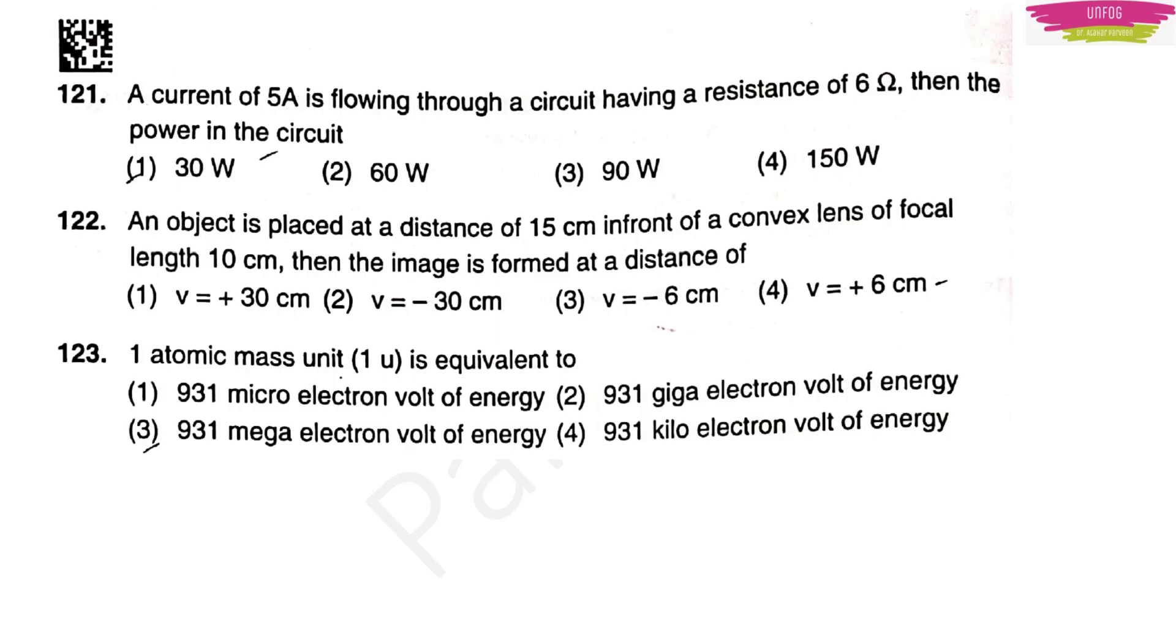First science question was question number 121. This part is from physics actually. The question is a current of 5 ampere is flowing through a circuit having a resistance of 6 ohms then the power in the circuit. I have shown one formula relating to power and current and resistance. The formula is power is equal to current square into resistance. Just substitute the value of current which is 5 amperes whole square into resistance which is 6 ohms. 5 square will be 25, 25 into 6 will be 150 and the unit for power is Watt. Option 4 will be the correct answer.